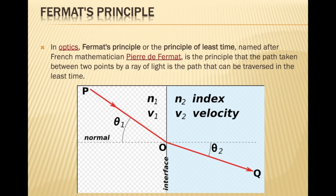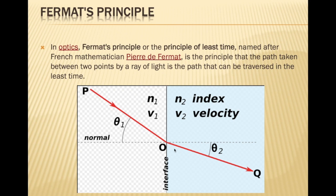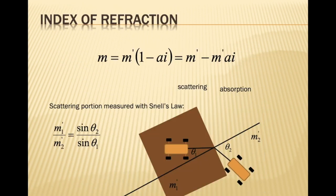Fermat's principle in optics, also called the principle of least time, named after the mathematician Fermat, states that the path taken between two points by a ray of light is the path that can be traversed in the least time. This means light always chooses the shortest path. If the medium is the same it moves straight; if you choose a longer path the distance is more, so light changes its angle towards the normal and chooses the shortest path.